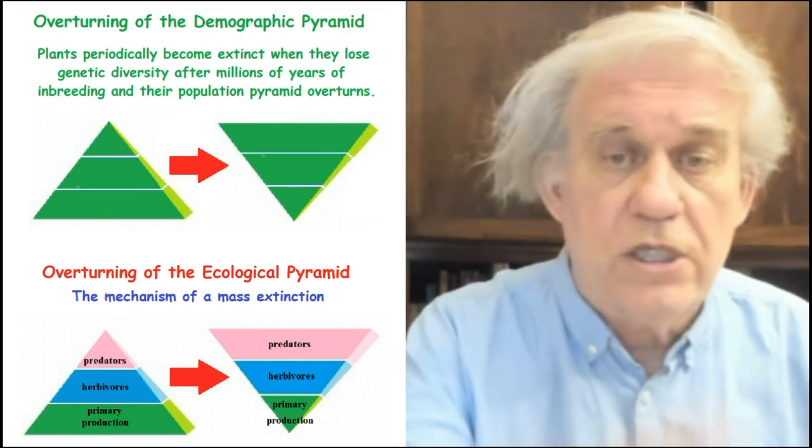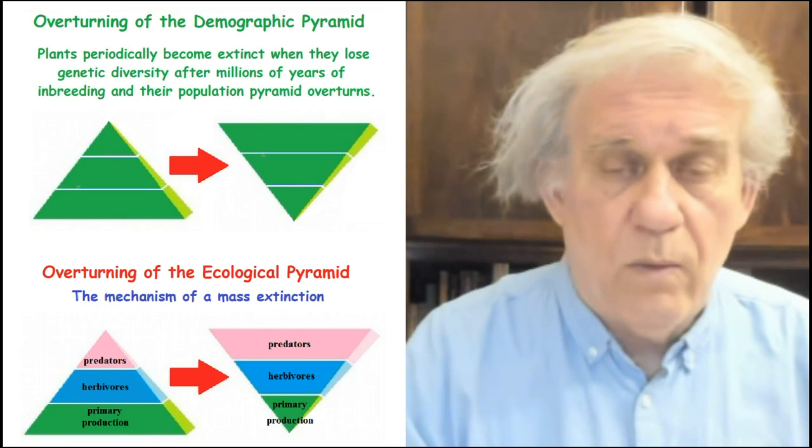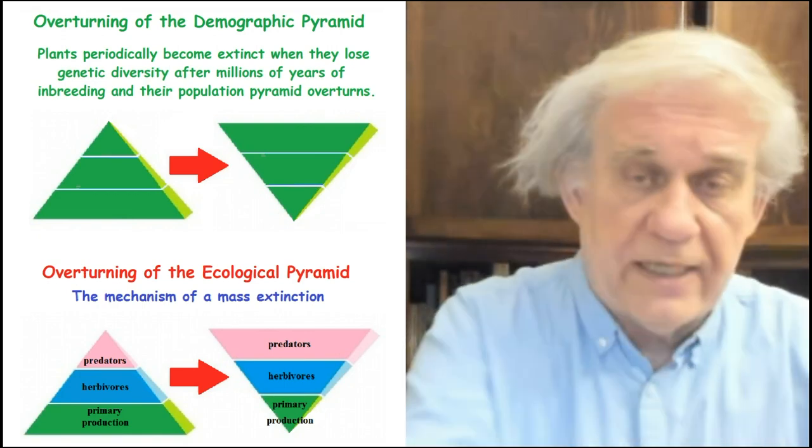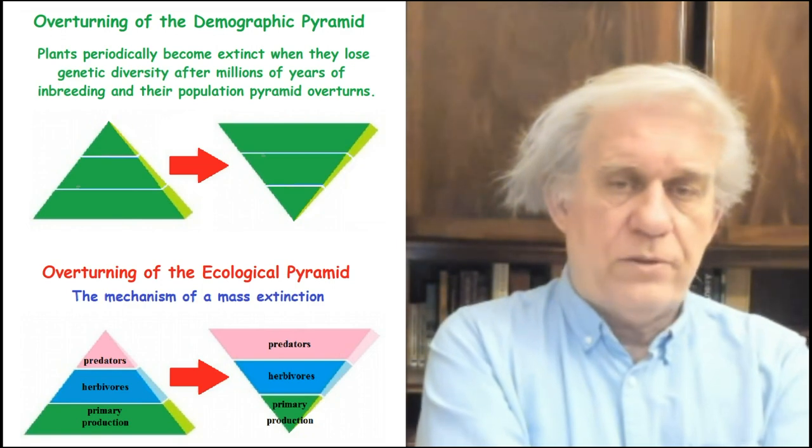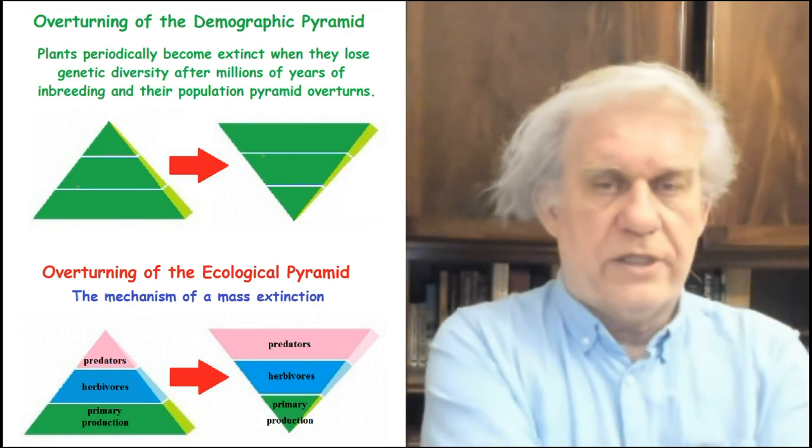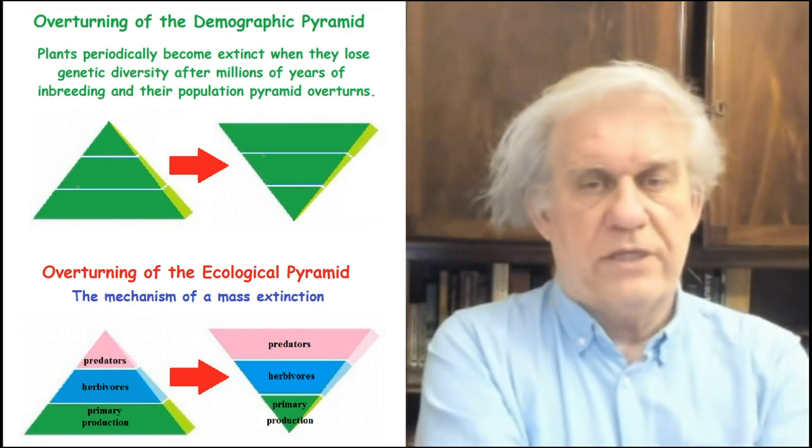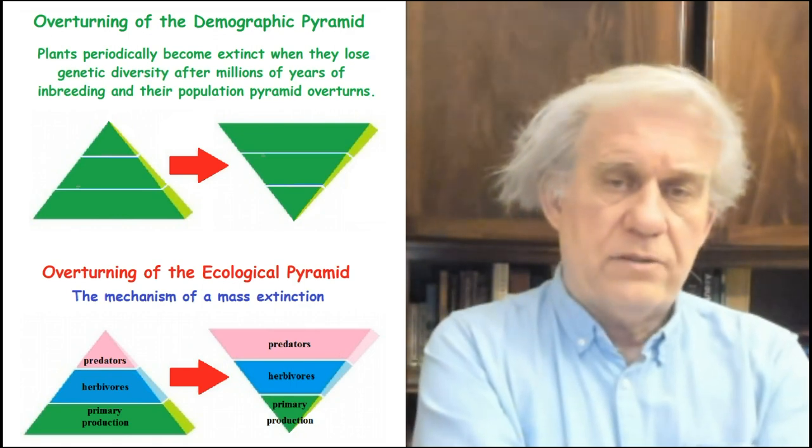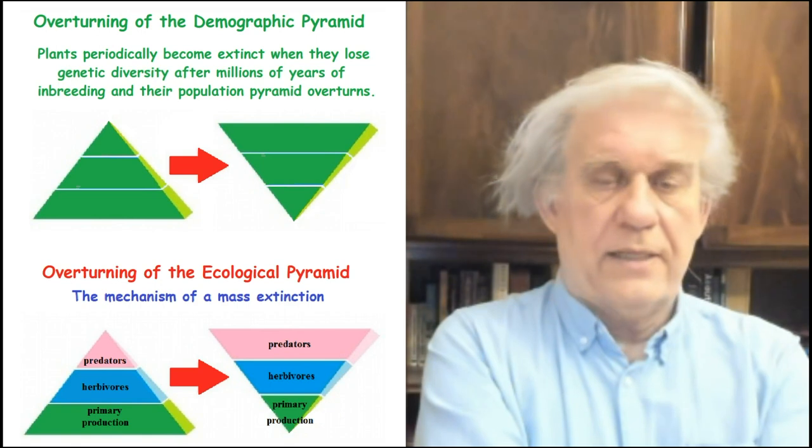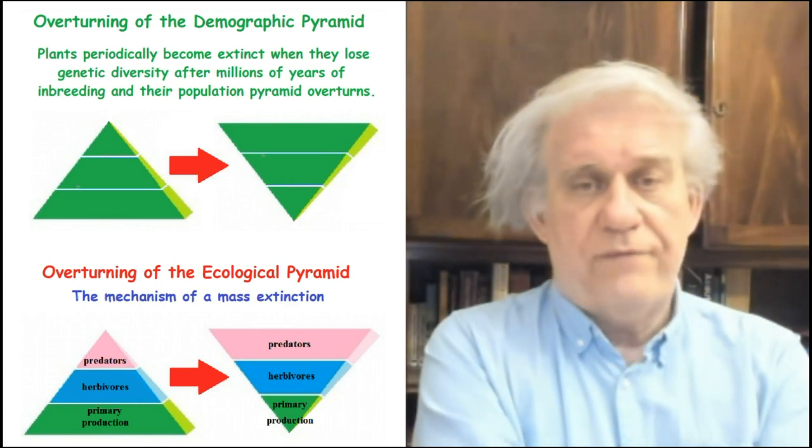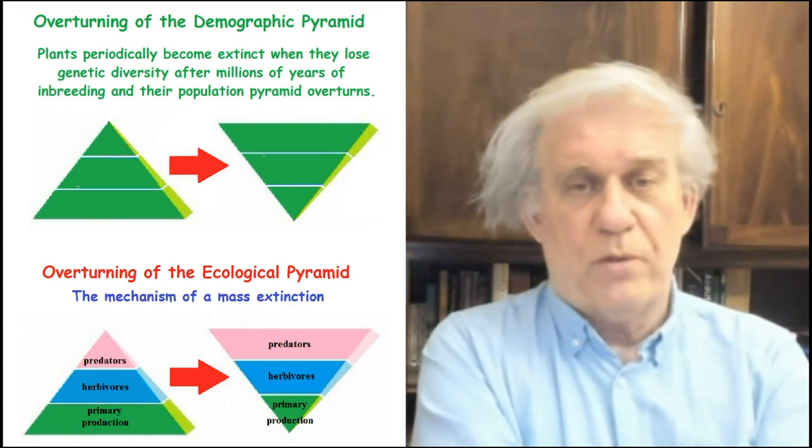And so what happens is the ecological pyramid overturns. Why does that depend on the population pyramid overturning? Well, because the fewer in part, that's just one of the ingredients in the recipe. And it's goes like this, the fewer people we have, the less demand we have. And the less demand we have, the fewer things that big corporations can sell, both goods and services.